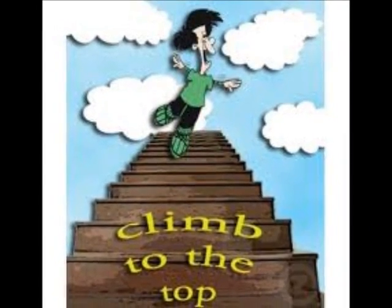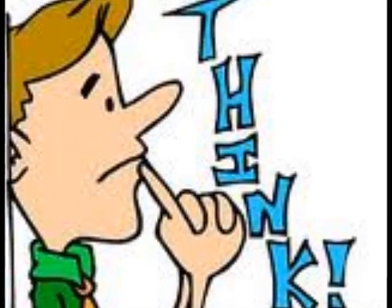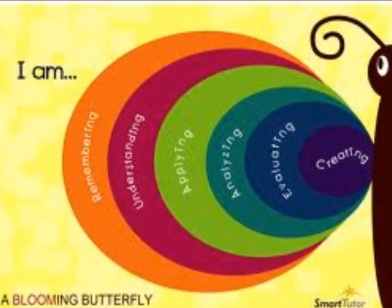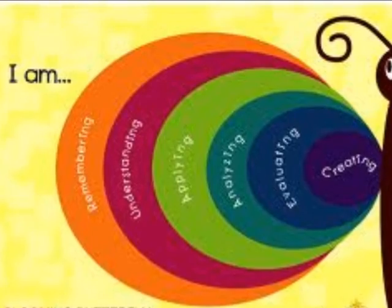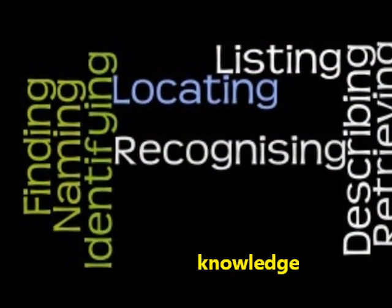One area that I would like to focus on is the cognitive domain or thinking skills. According to Bloom's Taxonomy, this domain can be broken down into six categories. First, we have knowledge. This is recalling or remembering learned material.